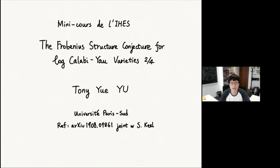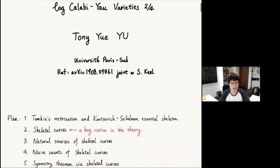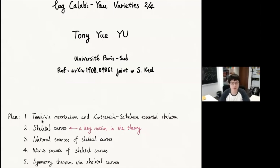Thank you very much for coming to the second lecture of this mini-course. Here is the plan for today. First, I'll explain the theory of Tamkin's materialization and the Kondasiewicz-Sobelmann essential skeleton. Second, I'll introduce skeletal curves, which is a key notion in the theory. Third, I'll explain where skeletal curves come from in practice, natural sources of skeletal curves. And fourth, I will introduce naive counts of skeletal curves. And finally, I will give a proof of the symmetry theorem via skeletal curves as an application of the theory.